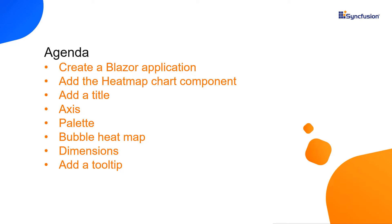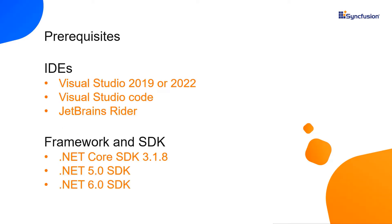Let me start with the application creation process. A Blazor application can be created using Visual Studio 2019 or 2022, Visual Studio Code, or JetBrains Rider. In this video, I'll show you how to create a Blazor WebAssembly application using Visual Studio 2022. Make sure that you have installed compatible SDK versions like the .NET Core SDK 3.1.8, .NET 5.0 SDK, or .NET Core 6.0 SDK.